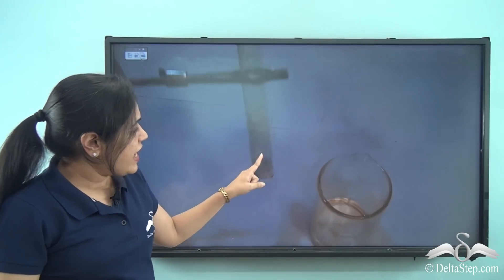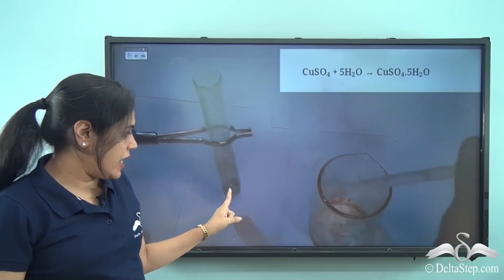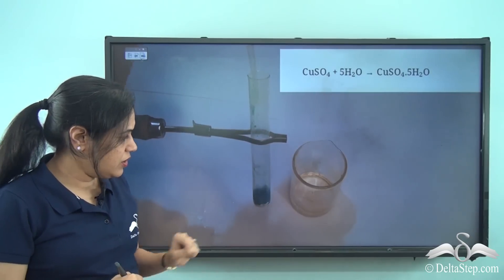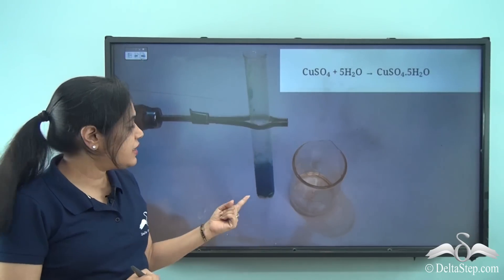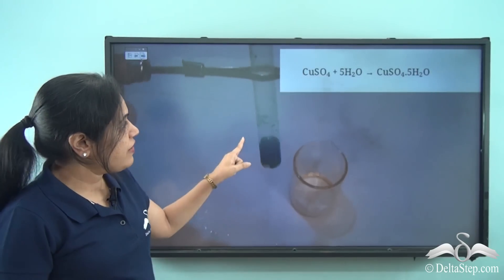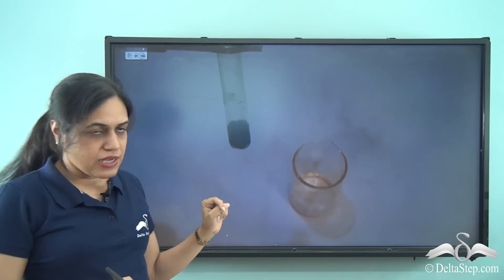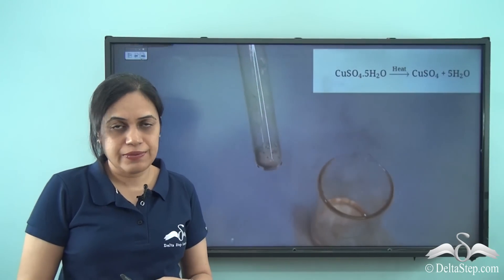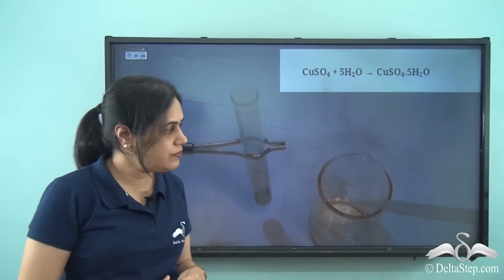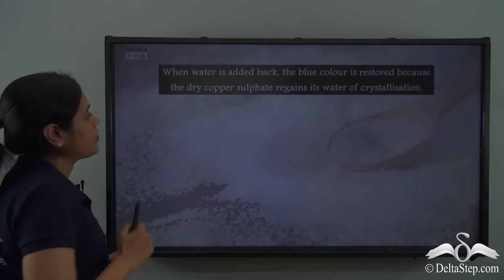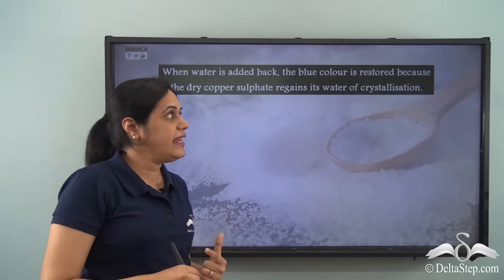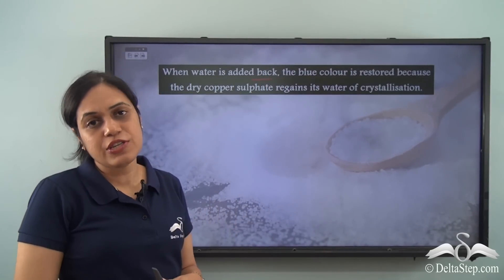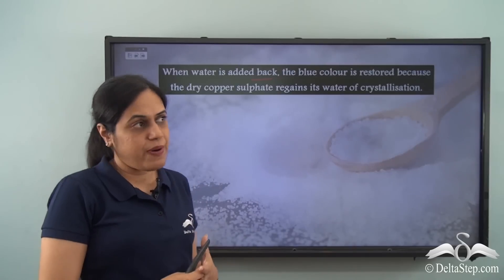Now when we add water to this white copper sulphate — we add a few drops of water — we find that it turns blue again. So when we add water to white copper sulphate, it turns into blue coloured copper sulphate again. When water is added again to the white copper sulphate, the blue colour is restored.